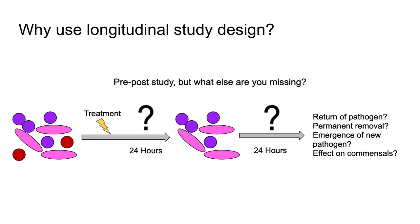While this type of sampling is great for gaining exploratory data for a pilot study, it doesn't typically give you enough information to make strong conclusions. Initial conclusions may suggest that the treatment clears the pathogen from the patient. However, you may be missing what takes place immediately after treatment, before the 24-hour post-treatment measurement, and what changes take place after that. For example, after 48 hours, the pathogen could return, not return, there could be the emergence of a new pathogen previously laying dormant, or a negative or positive effect on the commensals. Each of these scenarios can drastically change your conclusion on the effectiveness of that treatment towards the pathogen.